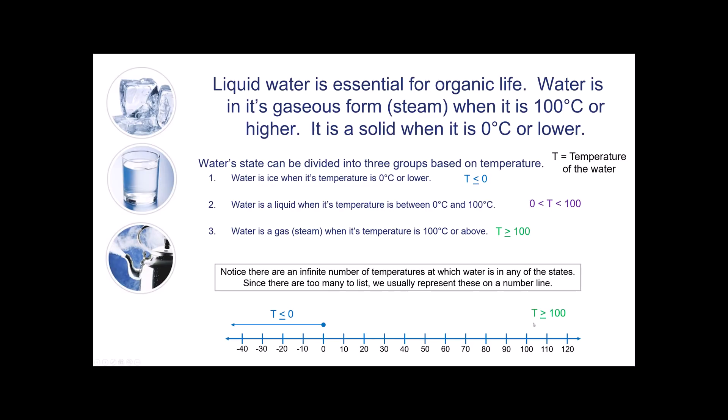I can do the same thing for steam. Temperatures greater than or equal to 100. 100 is here. Everything greater than 100 is to the right, so I have an arrow. Notice that 100 is included, so I make sure I put a dot there, so it's easy to know that.